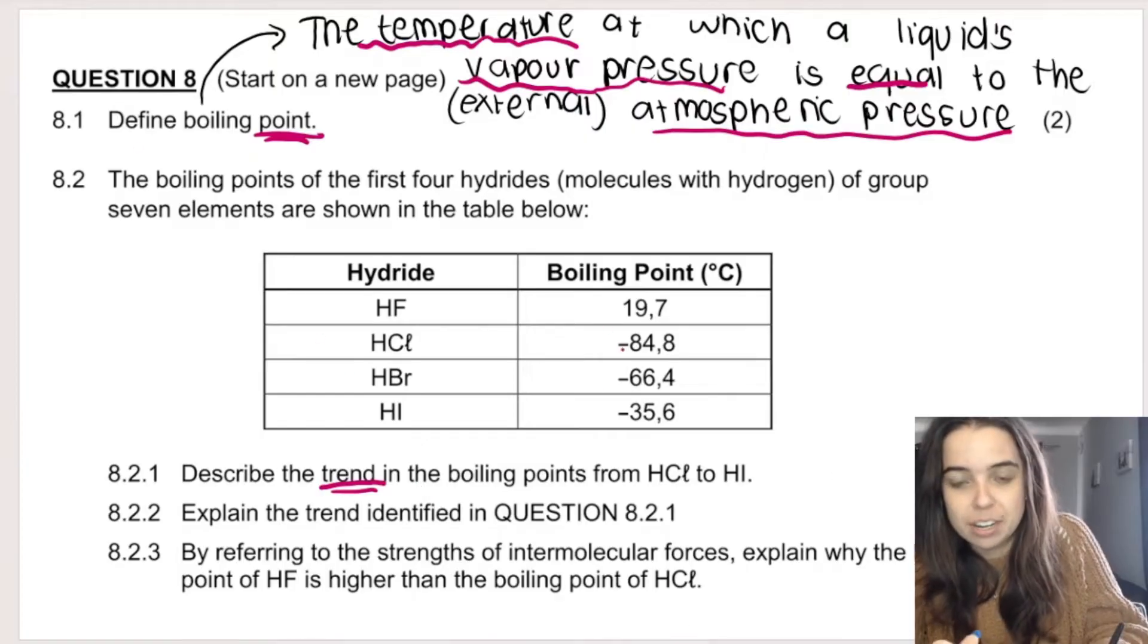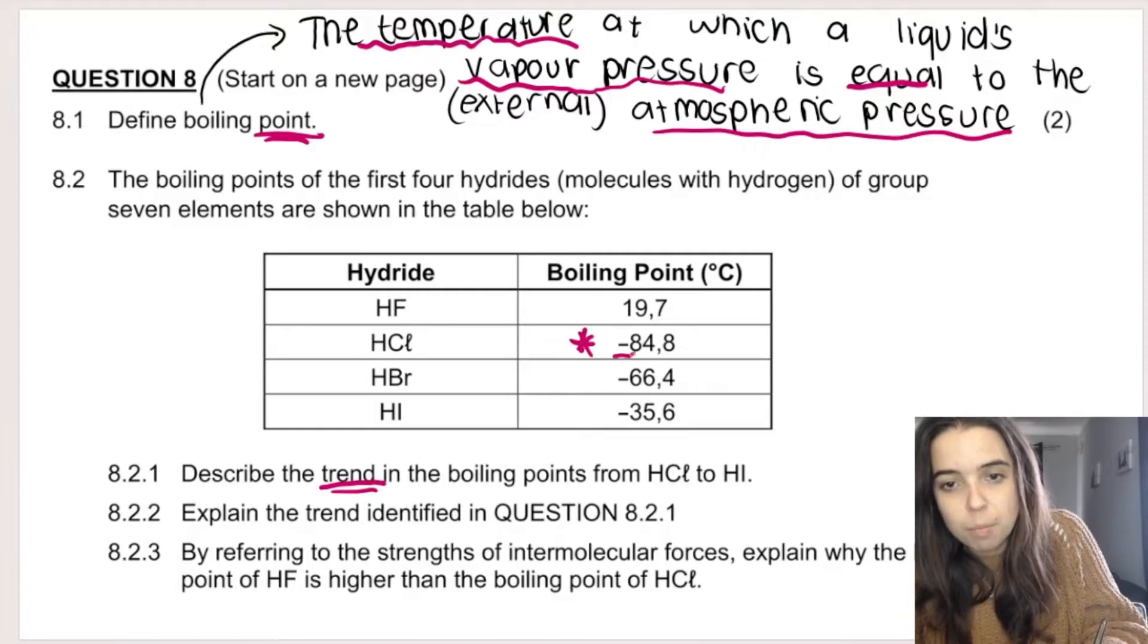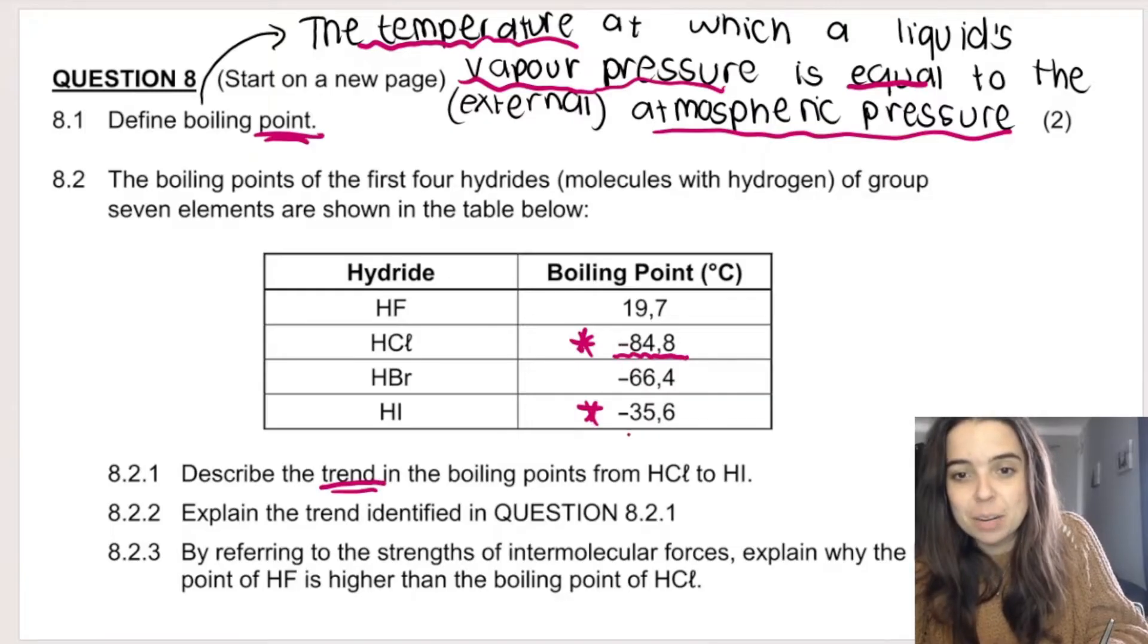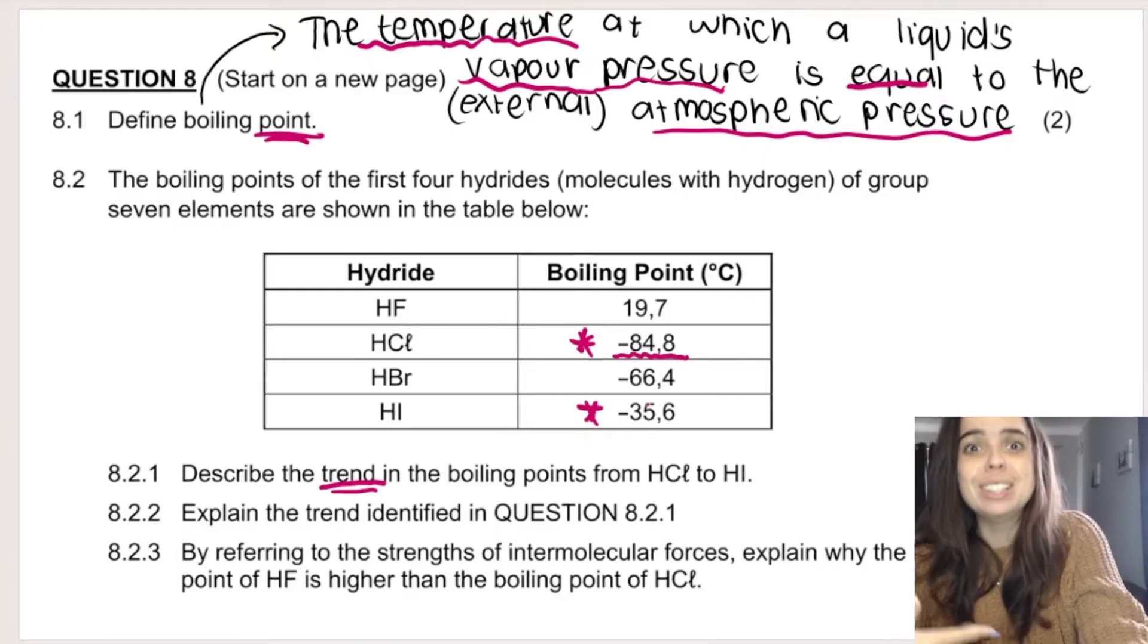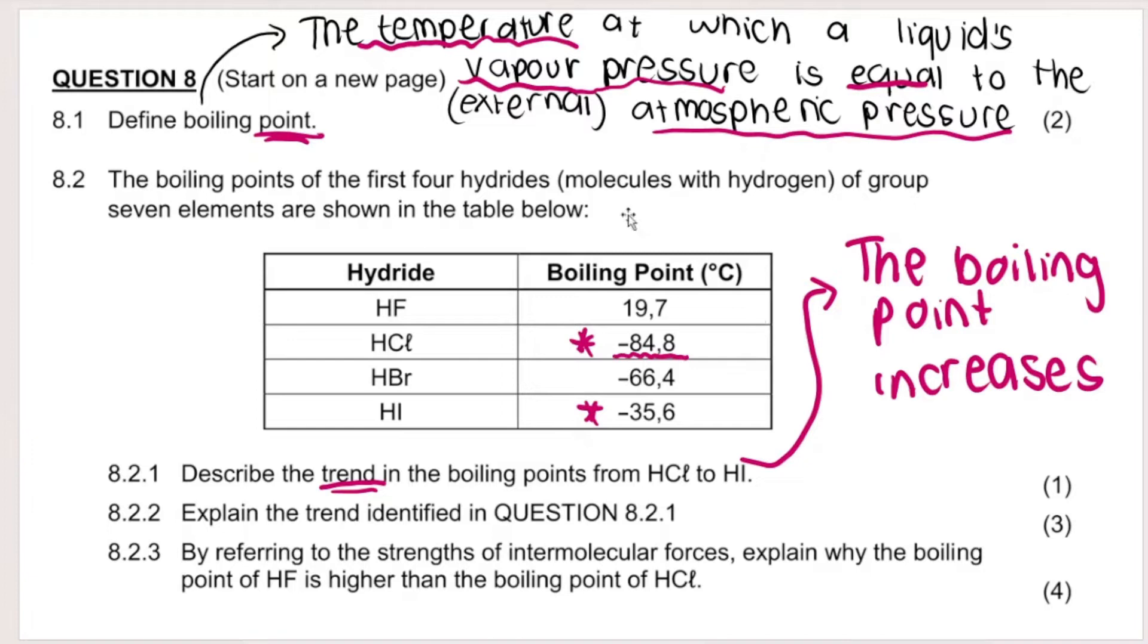You see how I hesitated there for a second because of the negative numbers? HCl has a more negative boiling point than HI. It's getting more negative, therefore the boiling point is increasing. So there's the trend over there. The boiling point increases as you go from HCl to HI. Now explain the trend identified in question 8.2.1. They're basically asking me why.